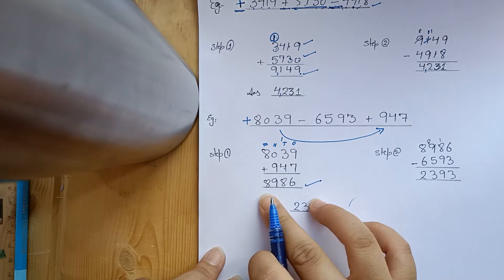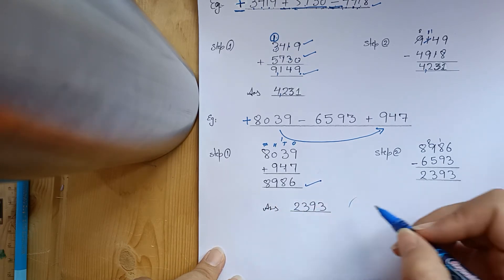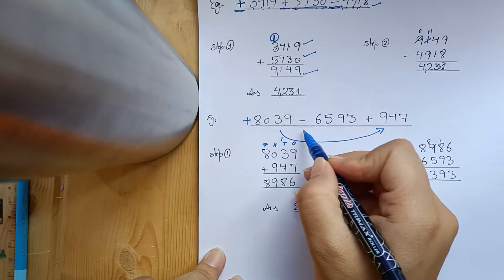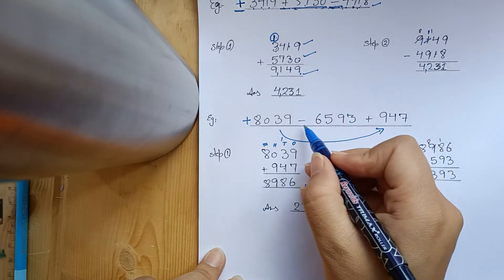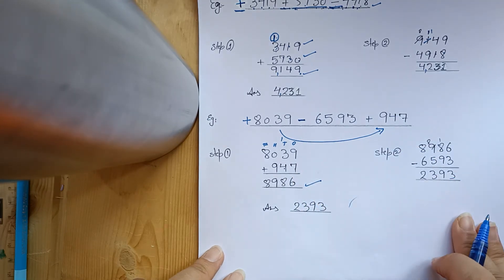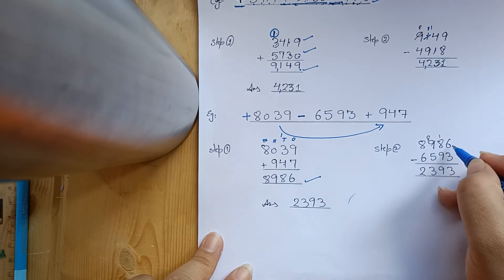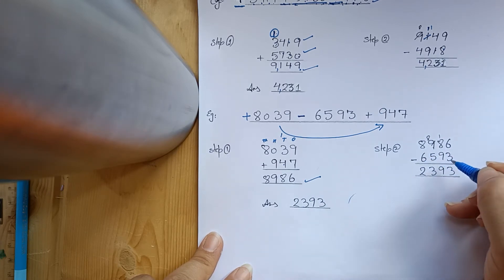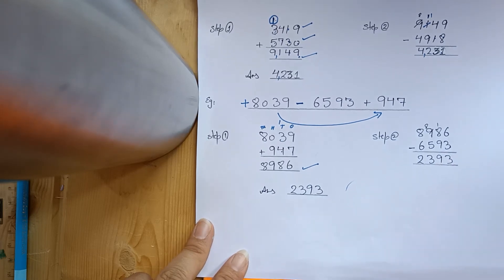So what is your answer? 8,986. Now let's look at the second step. What will we do with the minus number? The number with the minus sign, we will subtract it. So write this number here — 8,986 — and we will minus 6,593.